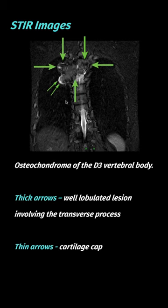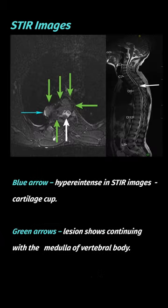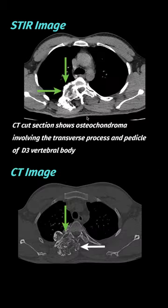The cartilage cap is continuous with the adjacent vertebral marrow, and here you can definitely appreciate the compression on the spinal cord. CT shows dense ossification — the classical cauliflower-like appearance of osteochondroma of the spine.